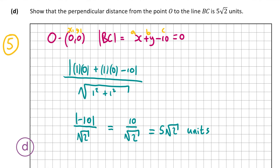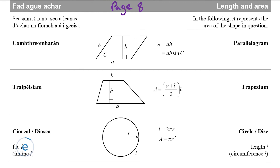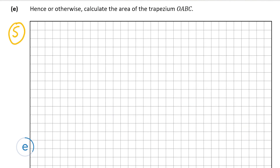Part E is the final part, also worth 5 marks: calculate the area of trapezium OABC. The formula is (a + b) / 2 × h, where a and b are the two parallel sides and h is the perpendicular height. We have OA = √2 from part A and h = 5√2 from part D. We still need to calculate the length of BC, using coordinates B (4, 6) and C (10, 0).